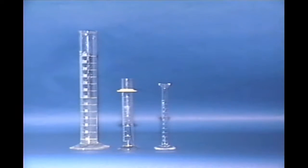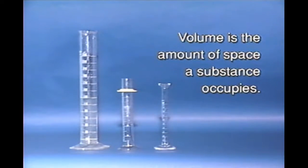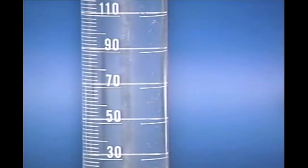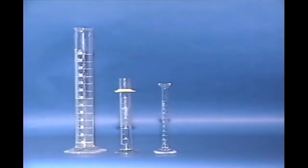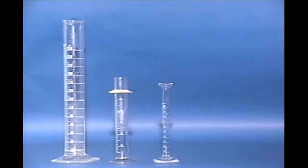Scientists use graduated cylinders to measure volume. Volume is the amount of space a substance occupies. Graduates come in different sizes but are all marked off in easy-to-read divisions. Here are three different sized graduates.